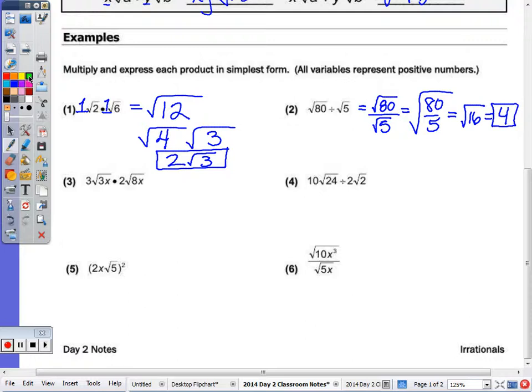Number three, so we have the coefficients out front. 3 times 2 is 6. Keep the radical, 3 times 8 is 24, and x times x is x squared.